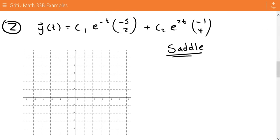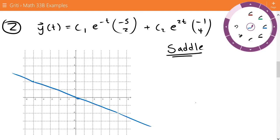And let's go ahead and draw the eigenvectors, negative 5 positive 2. So that's out here. And we can just extend that right away. And then we have negative 1 positive 4.